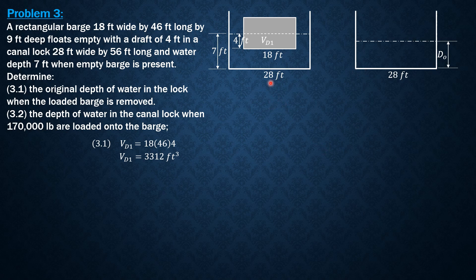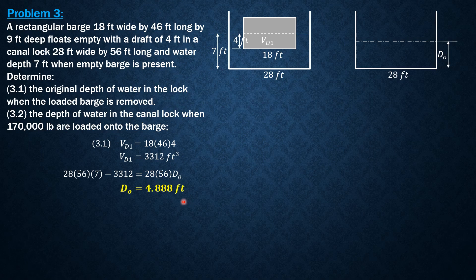So V_d1 equals 3,312 cubic feet. The equation is: 28 times 56 times 7 minus V_d1 equals 28 times 56 times d_sub_o. Solving, 28 times 56 times 7 minus 3,312 equals 28 times 56 times d_sub_o. From here we compute d_sub_o equal to 4.888 feet.